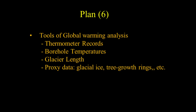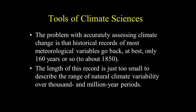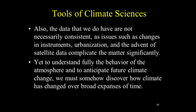Let's conclude this brief review with some proxy data, including glacial ice, tree growth rings, and more. The problem with accurately assessing climate change is that historical records of most meteorological variables go back at best only 160 years, or to about 1850. This record is too small to describe the range of natural climate variability over thousand and million year periods. Additionally, data inconsistencies arise from changes in instruments, urbanization, and the advent of satellite data.